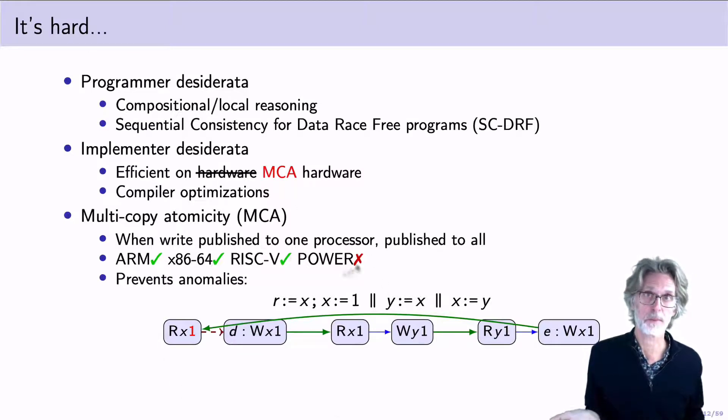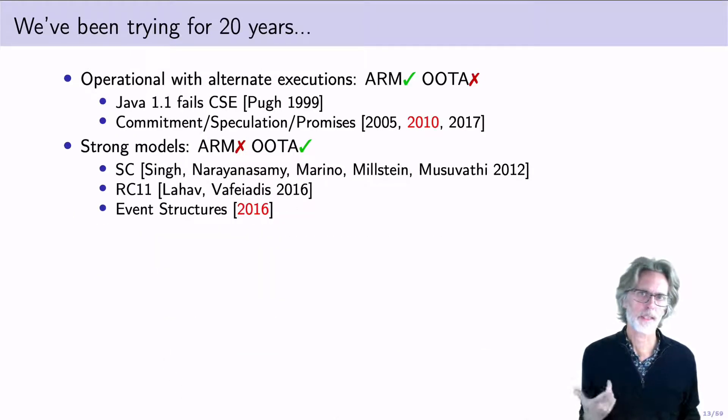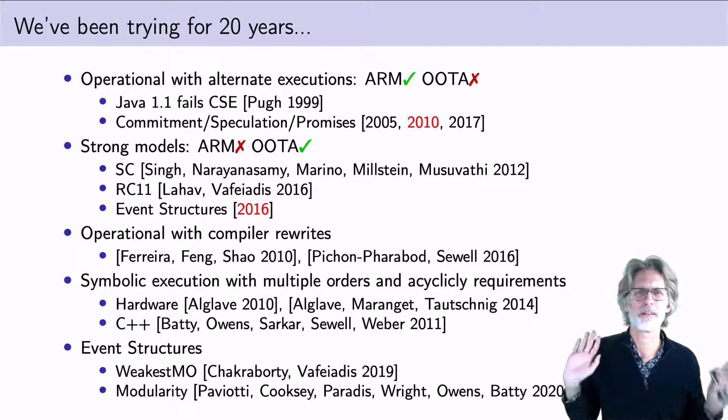The study of relaxed memory models began in earnest when Pugh noticed that common sub-expression elimination failed for Java 1. And that created a bunch of operational models, which are more or less weak in the sense that they allow UTA4 and UTA5, but they compile efficiently. And there's also been a development of a bunch of strong models that have the reverse problem. And this includes models from us developed in 2010 and 2016. But there's also been a lot of work.